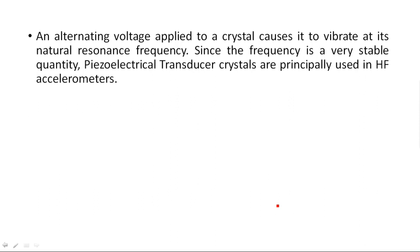An alternating voltage applied to the crystal causes it to vibrate at its natural resonance frequency. Series and parallel RLC circuits have a resonant frequency at which maximum amplitude is achieved; above and below that frequency there are no oscillations. When an alternating voltage is applied, the crystal vibrates at that particular resonant frequency.